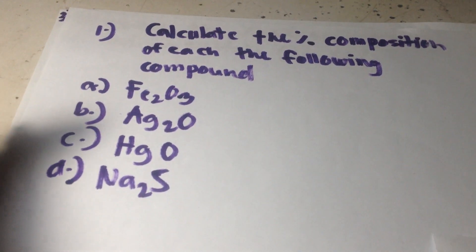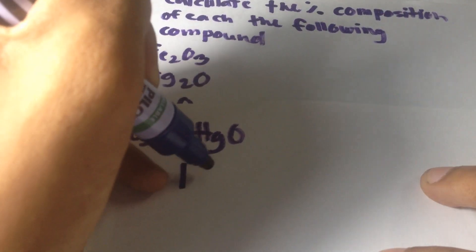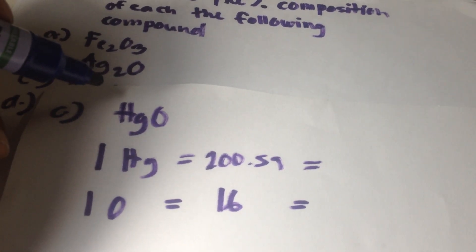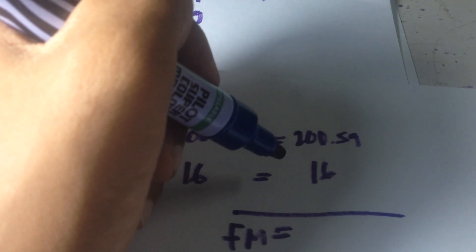In letter C, we have mercury(II) oxide. It has 1 mole of mercury and 1 mole of oxygen. The atomic mass of mercury is 200.59 and oxygen is 16. The formula mass is 200.59 plus 16, which equals 216.59 grams per mole of mercury(II) oxide.